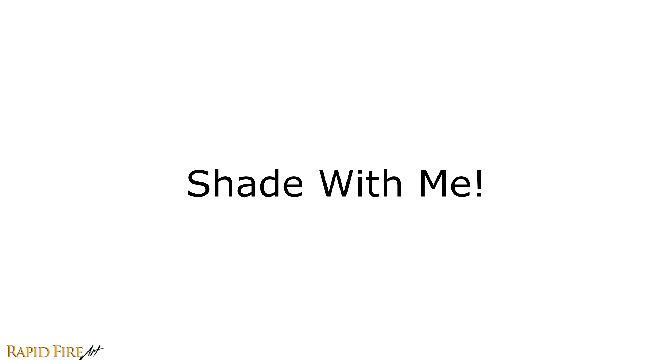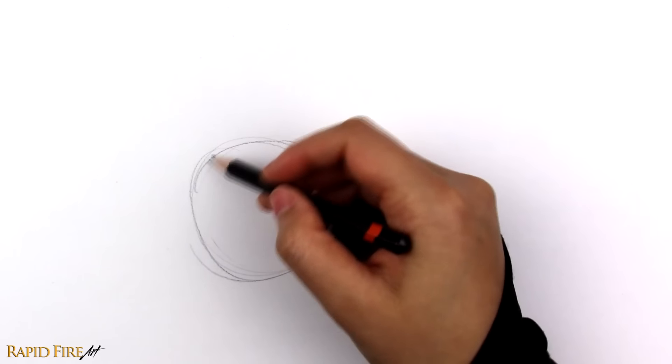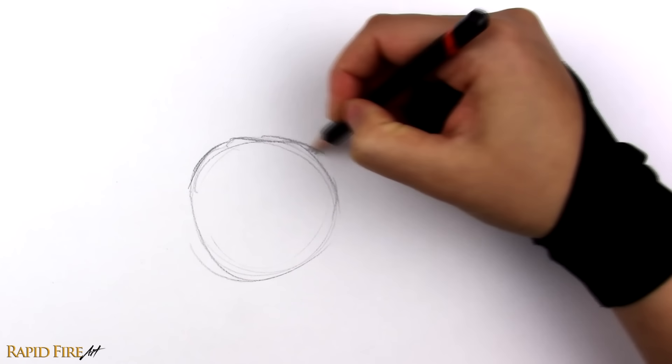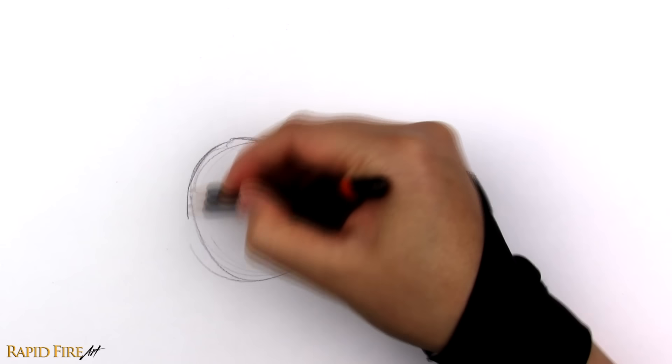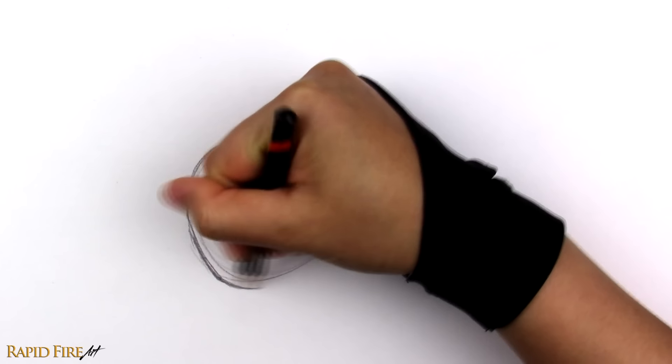Shade with me! Let's shade an apple together without looking at any reference images. With our basic knowledge of how light behaves, we can essentially draw from our imagination. We might not be very accurate, but it's a great way to actively think about how light behaves.